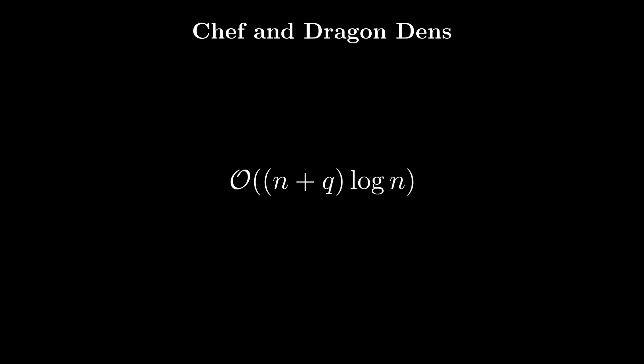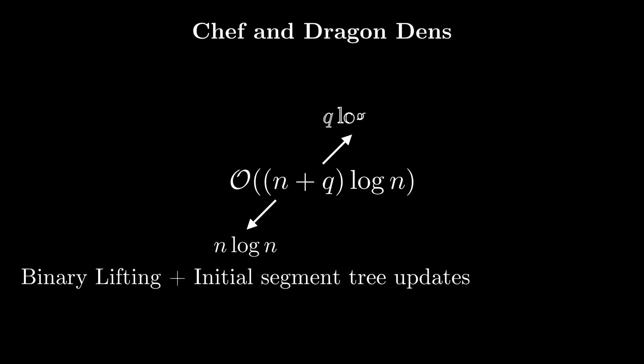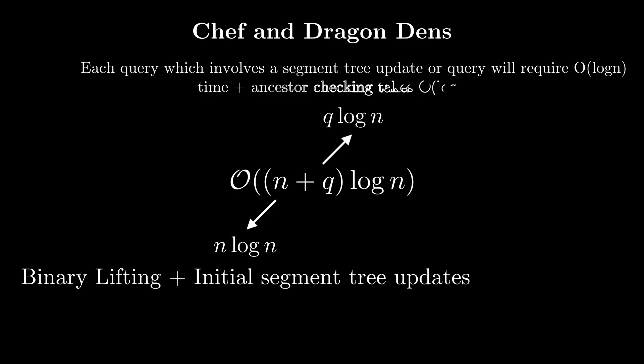The complexity is O((n + q) log n). The n log n part comes from binary lifting and initial segment tree updates. The q log n part comes from the fact that each query involving a segment tree update or query requires O(log n) time. Checking whether a node is an ancestor of another node also takes O(log n) time.